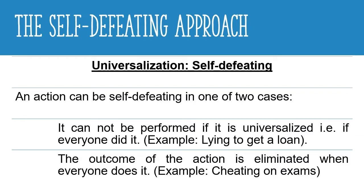An improvement to the golden rule approach is the self-defeating approach, where an action is considered immoral if it is self-defeating. An action is self-defeating in two cases. First, it cannot be performed if universalized. For example, imagine a world where everyone lies when getting a loan and never gives it back — trust would be out of the question, no one would loan anyone anymore, and thus the initial action of lying for loans becomes impossible. It rendered itself impossible, so it defeated itself.